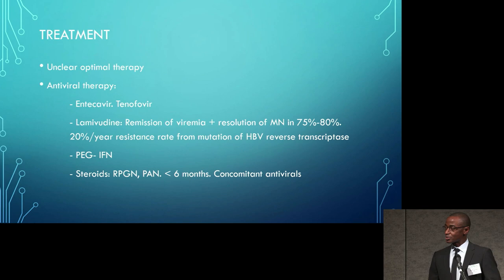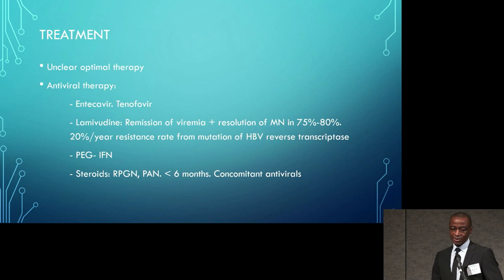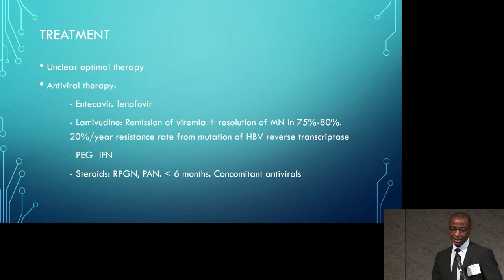Optimal treatment for hepatitis B-associated renal disease is unclear. Antiviral therapy approaches include entecavir as well as tenofovir. Lamivudine had been used and in some areas still is, but the problem is increased resistance due to hepatitis B mutation; however, it is very effective in remission of viremia and resolution of membranous nephropathy in up to 80% of individuals. The role of pegylated interferon is much less currently, and steroids may be used only in patients presenting with rapidly progressive glomerulonephritis or polyarteritis nodosa, balanced against the risk for reactivation of severe disease.